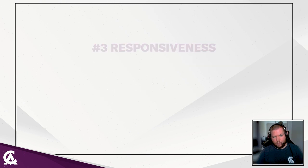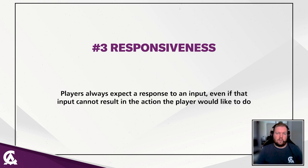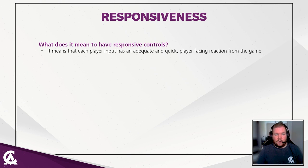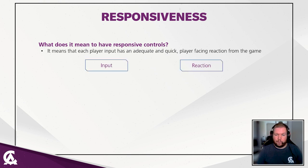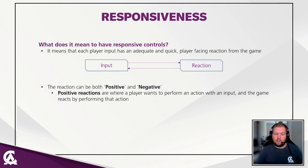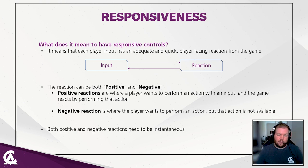That brings us to point number three: responsiveness. Players will always expect a response to an input, even if that input cannot result in the action they would like to perform. Responsive controls mean each player input has an adequate and quick player-facing reaction from the game — you have an input, and a reaction very shortly after. The reaction can be positive — where the player wants to perform an action and the game simply performs it — or negative — where the player wants to perform an action but it is not available at that time. Both positive and negative reactions need to be instantaneous.